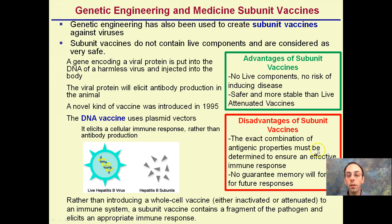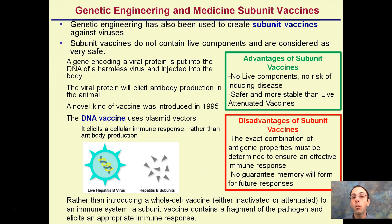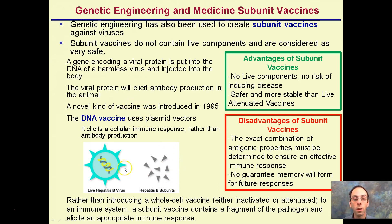There are disadvantages though. The exact combination of surface proteins must be correctly identified to allow the immune system to have an effective response against future infections. There's also no guarantee that memory will form for long-term future responses. This is typically why you have to get the flu vaccine every year — subunit vaccines don't have quite the longevity of actually getting infected with the full virus. However, the short-term advantage is it may get you through flu season or at least reduce symptoms.